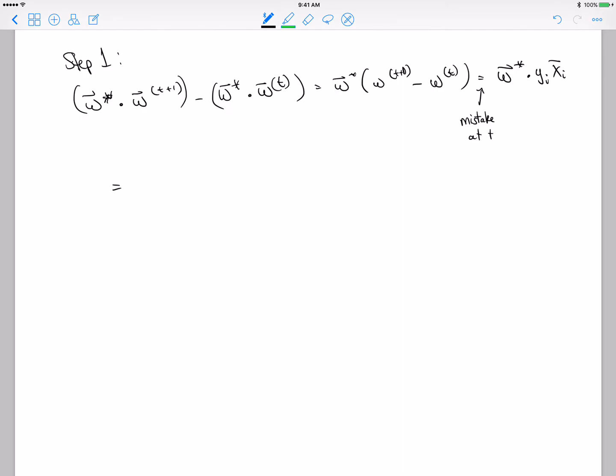So this thing is yi times W star dot xi. By definition of W star, all of the margins are positive, so that's at least delta.